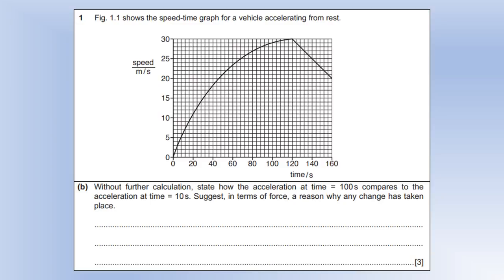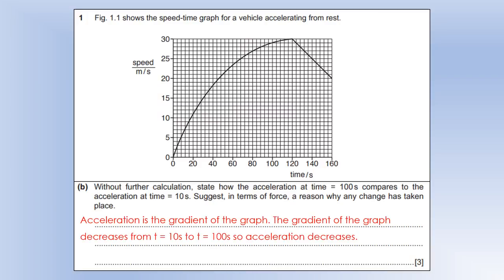So without further calculation, state how the acceleration at time 100 seconds compares to acceleration at 10 seconds and suggest in terms of force a reason why any change has taken place. So first of all the acceleration is the gradient of the graph and as time increases the gradient of that graph is decreasing up to 100 seconds. So if the gradient is decreasing that means acceleration is decreasing.